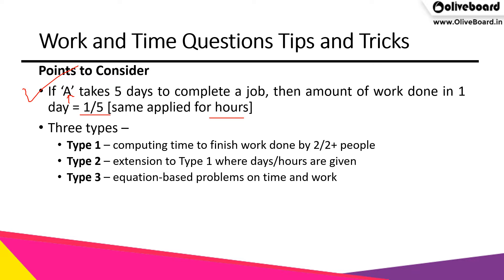There are three main types of questions you can expect from time and work, and we will solve one question of each type to clear our concepts. The first type is the computation of time to finish work by two or more people. You will have a situation where two people do a job separately in X and Y number of days, and the question asks how long they would take working together.